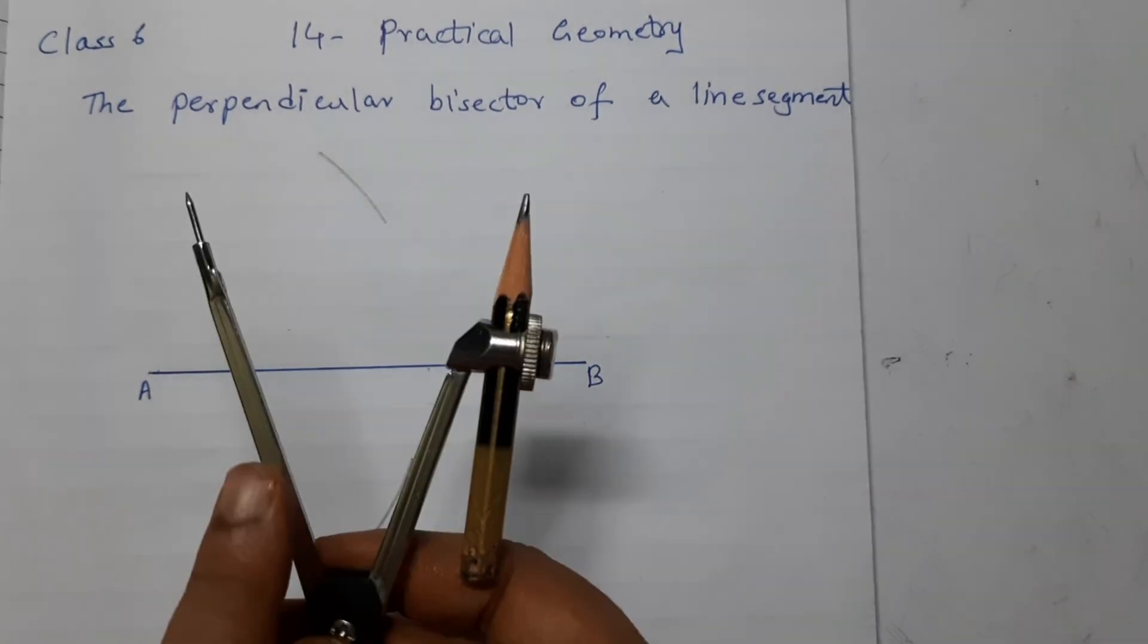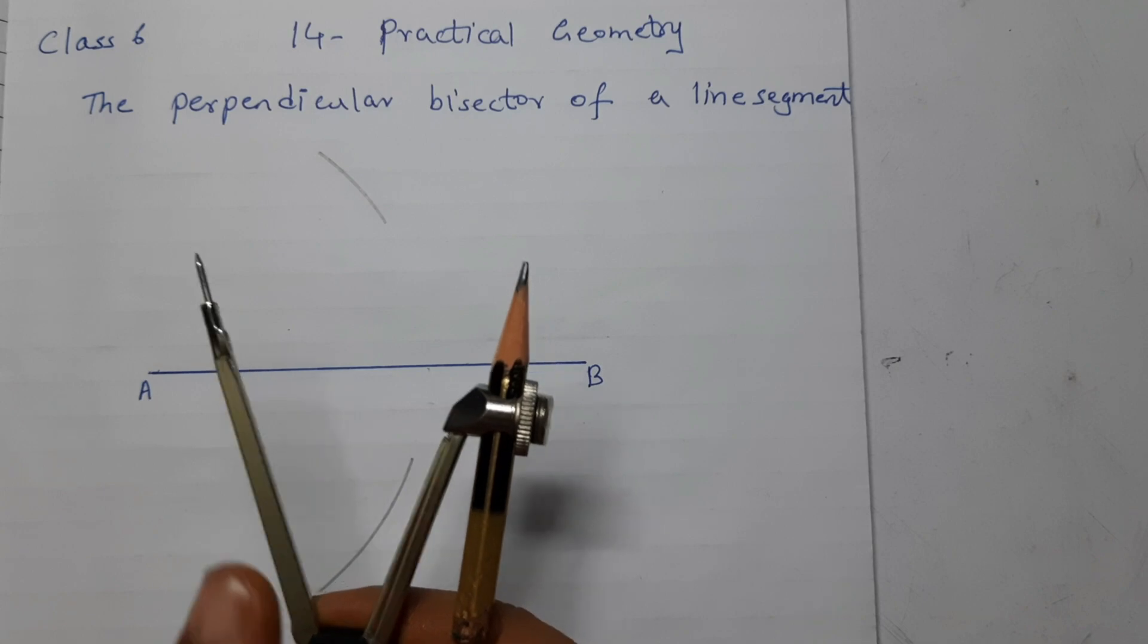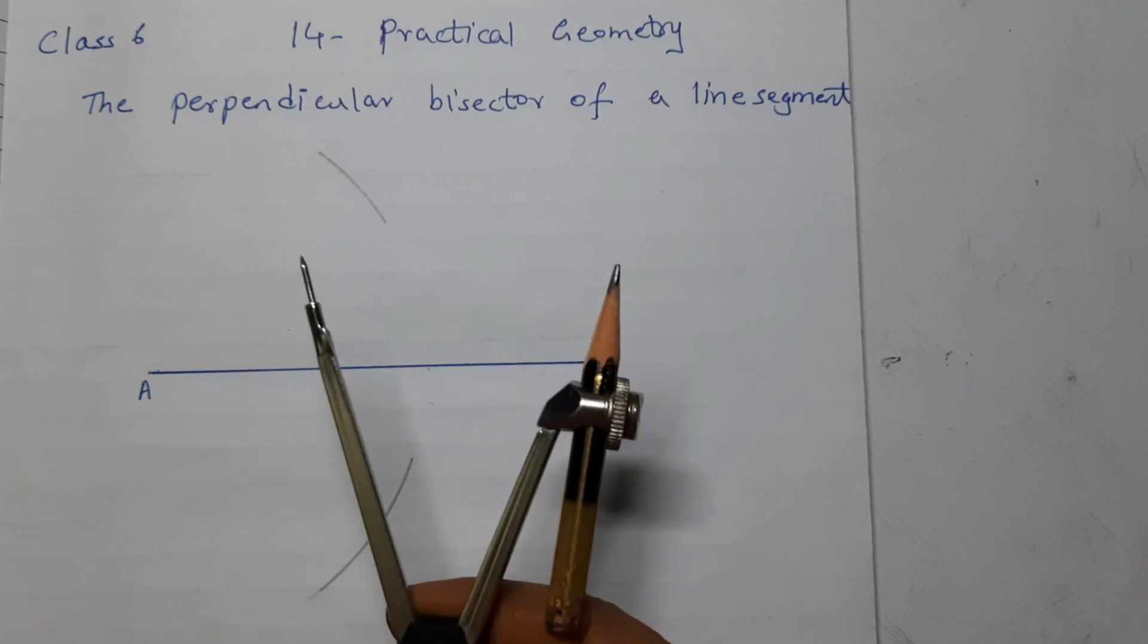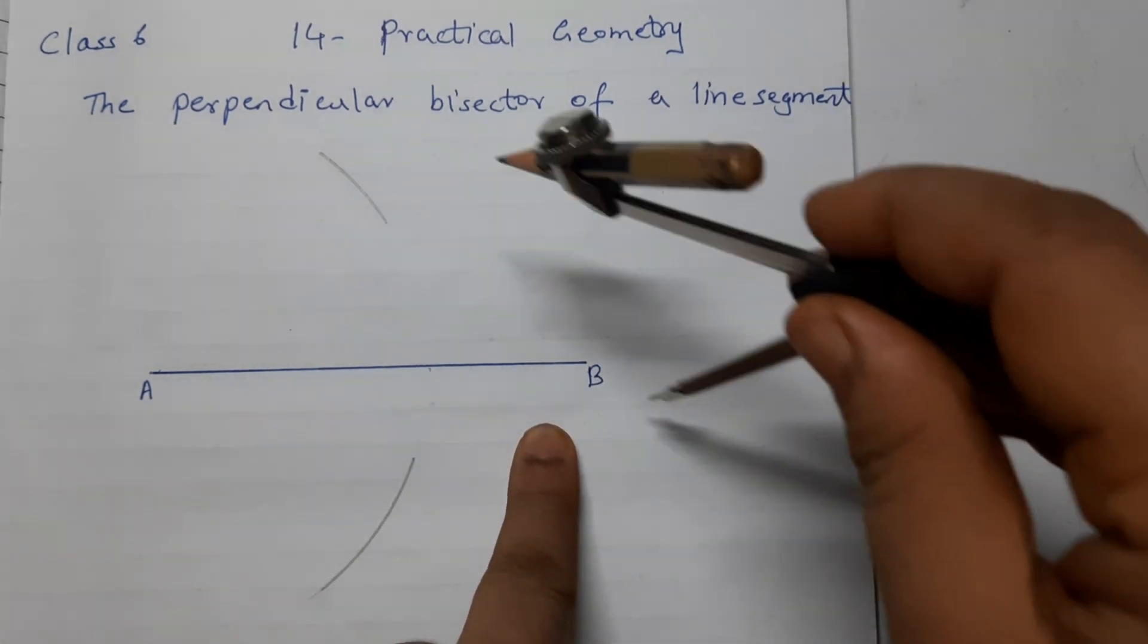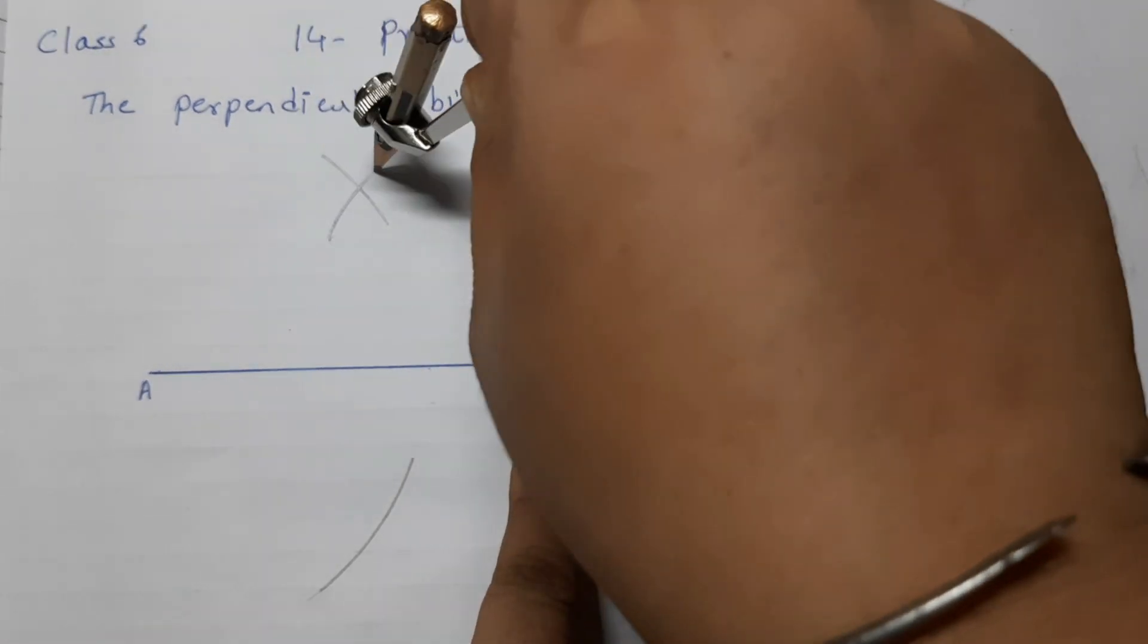Step 3: with the same radius, do not change the radius. With center as B, draw two arcs intersecting the previous two arcs.